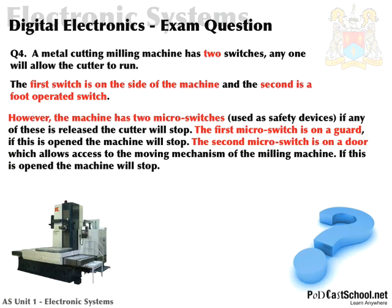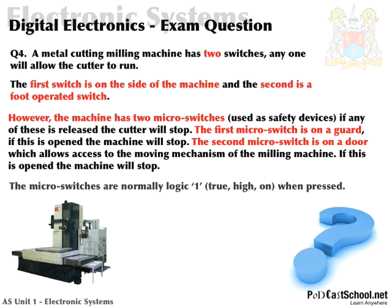If any of these is released, the cutter will stop. The first micro switch is on a guard — if this is opened, the machine will stop. The second micro switch is on a door which allows access to the moving mechanism of the milling machine — if this is opened, the machine will stop. In other words, if either of them are opened, the machine will stop. The micro switches are normally logic one, true, high, on when pressed. Draw the logic diagram for this machine.